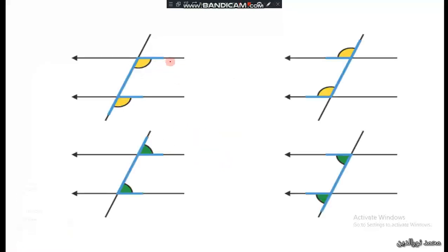This is how we check for corresponding angles — this is the F-test. As we can see, there is an F shape, and again an F in different orientations. The letter F appears in different orientations to help us identify corresponding angles.